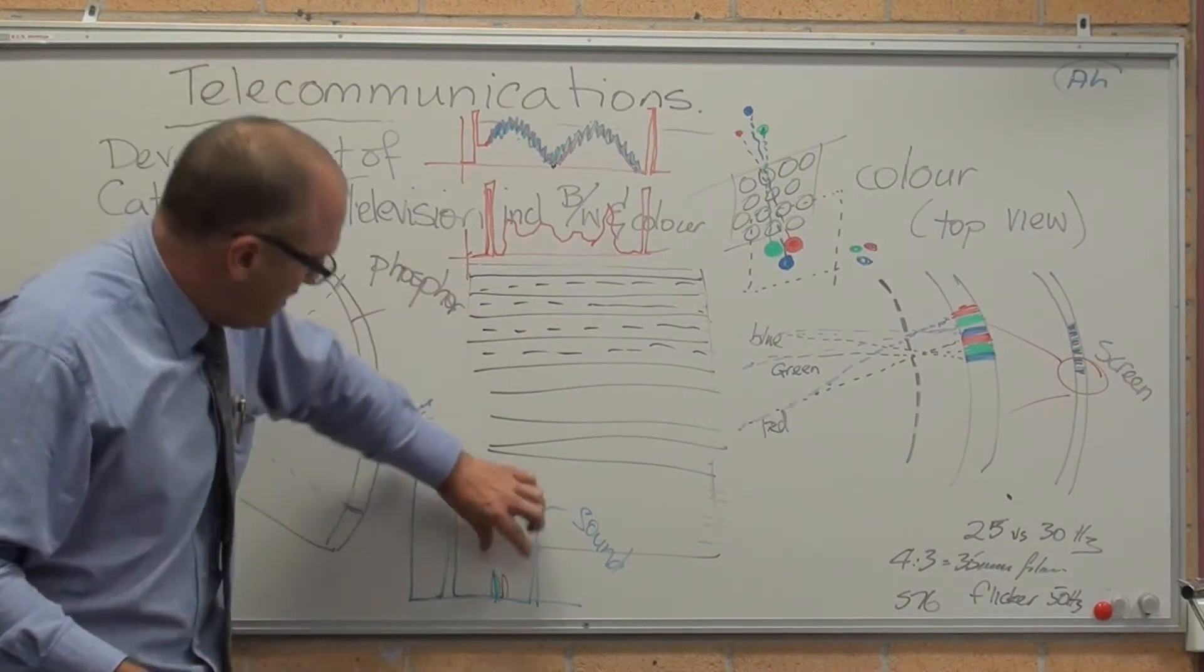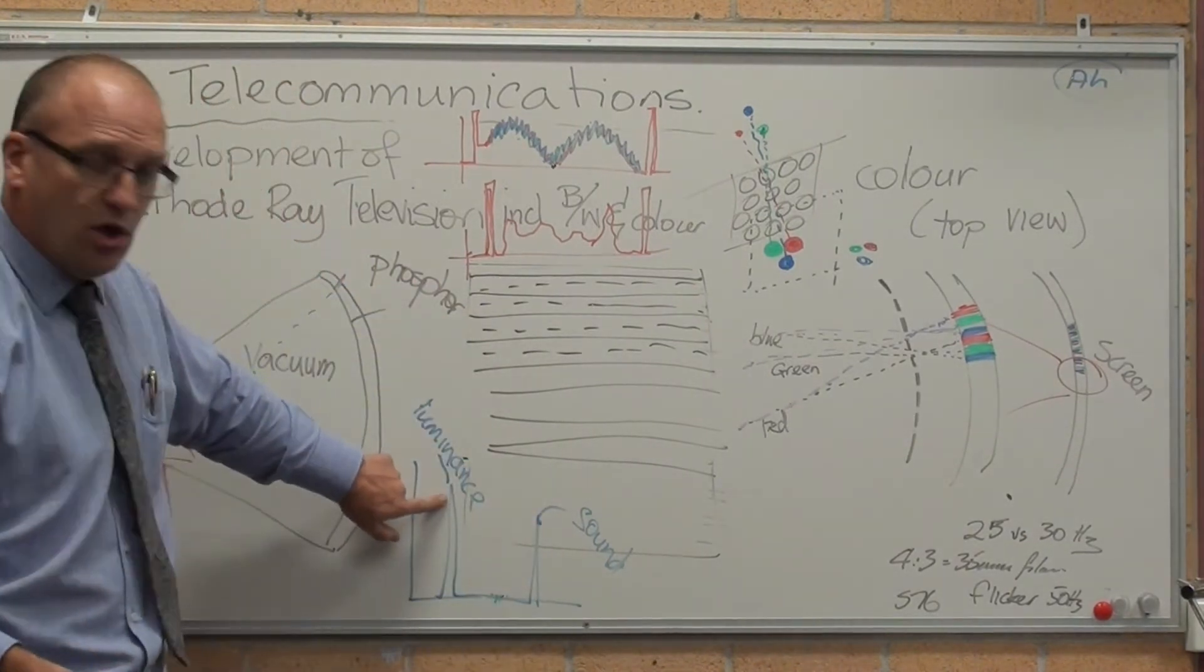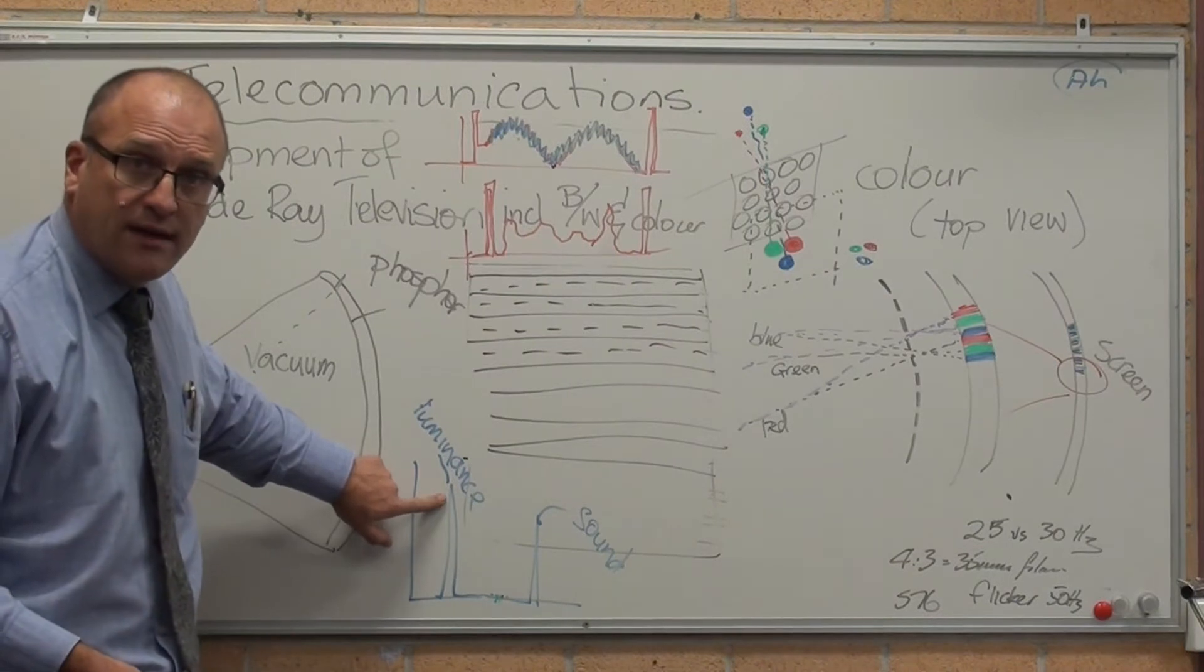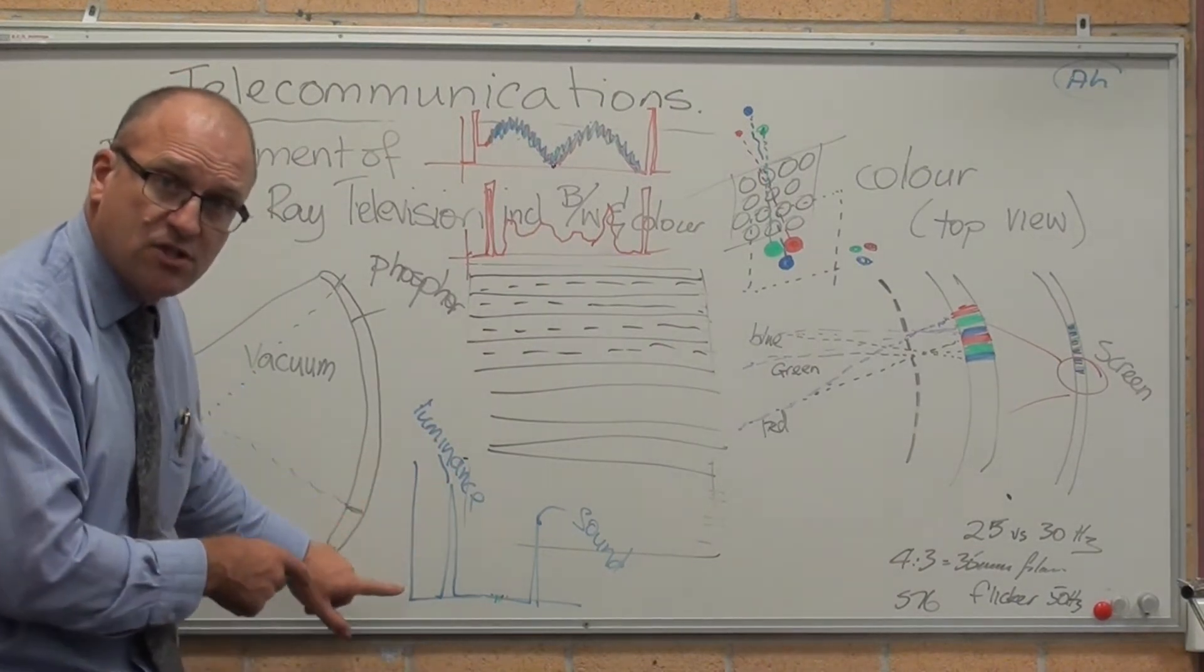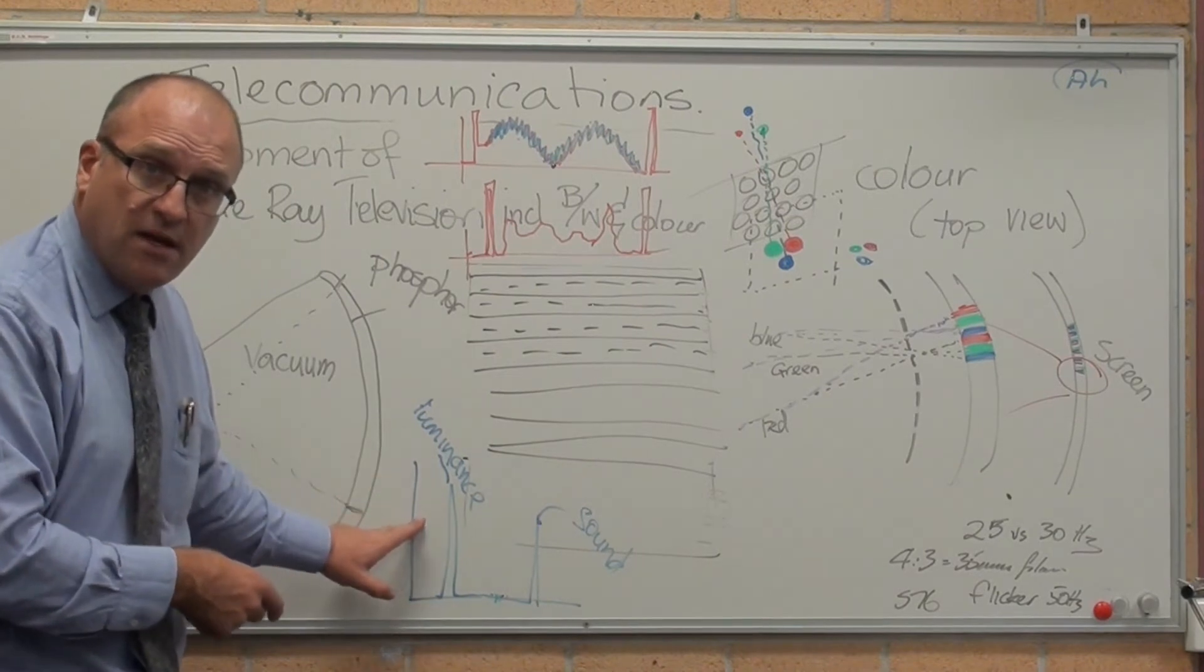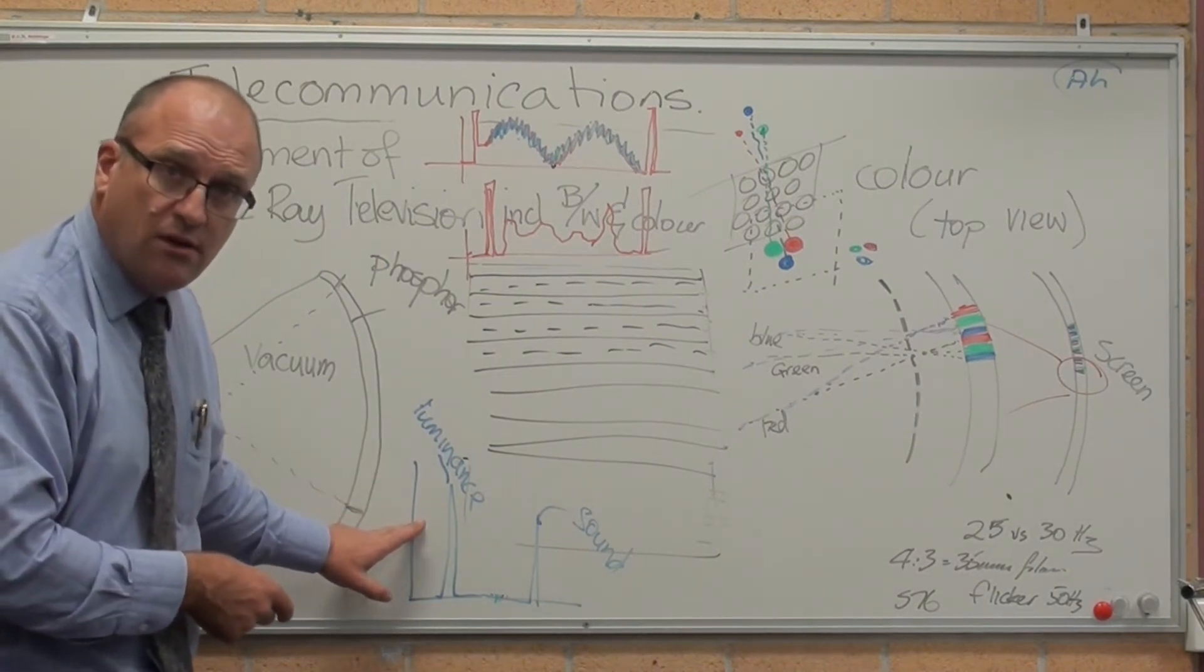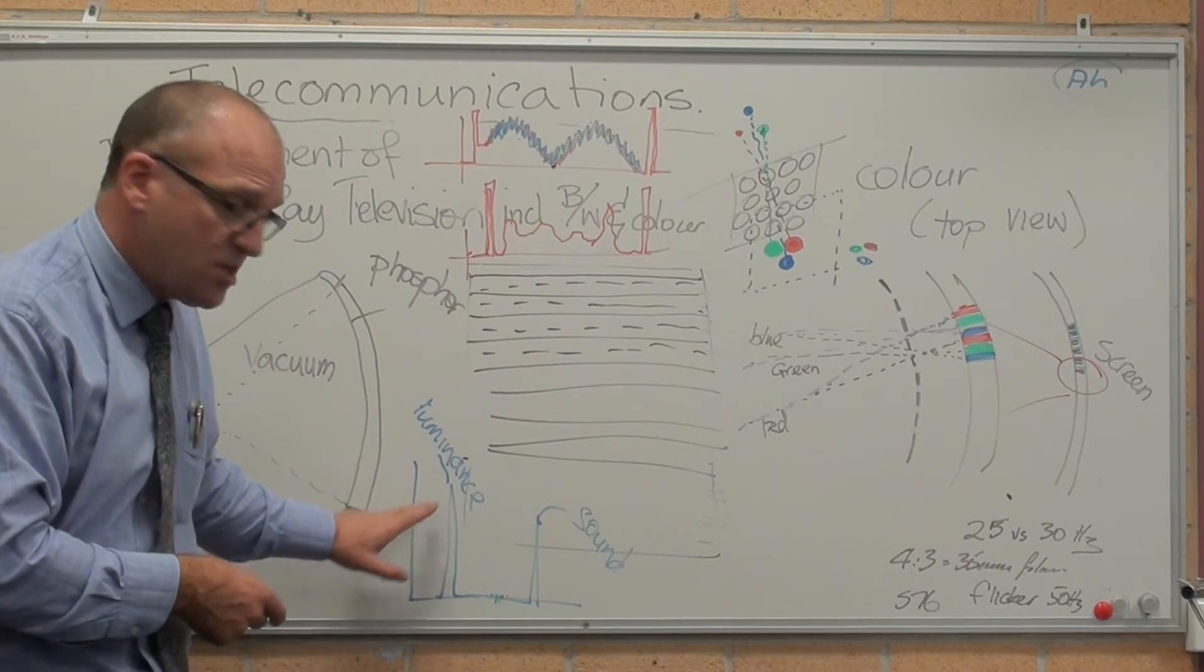Transmitted simply: luminance - how bright an image do you want on one frequency. This is a frequency band versus strength. Transmitted brightness, or how many electron beams you wanted, then sound on a separate carrier.